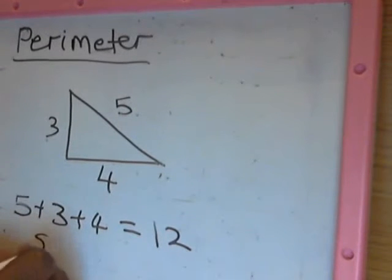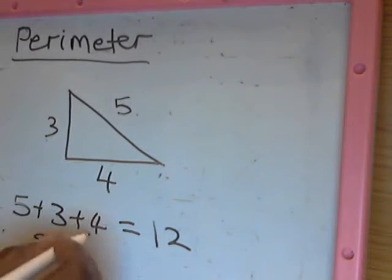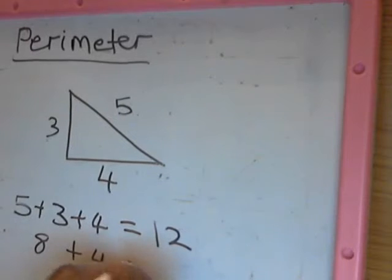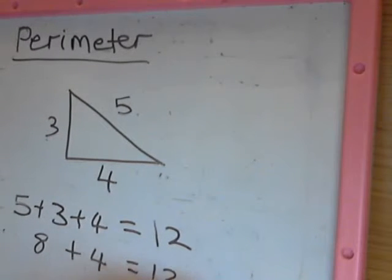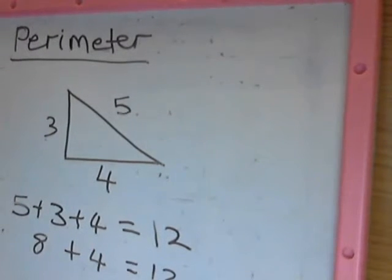So let's read again: 5 plus 3 gives us 8 plus 4, what does it give us? 12. So that's the perimeter of this triangle. So remember for next time, the perimeter is the sum of the sides of the object.